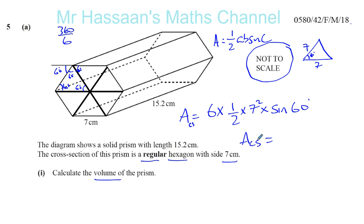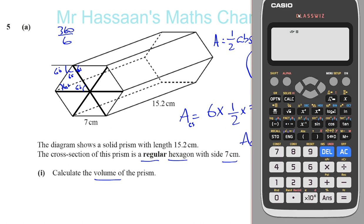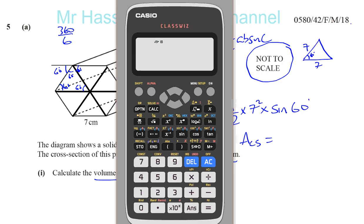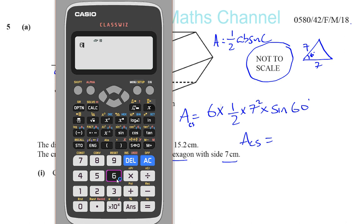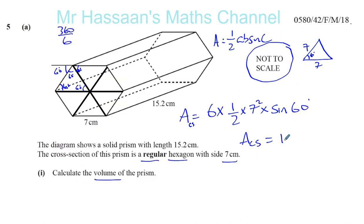Let's get the calculator ready. Notice some of you may have noticed I've got my new calculator here. This is six times a half times seven squared times sine 60. That gives us 127.305 continues on. I'm going to keep that value in my calculator.